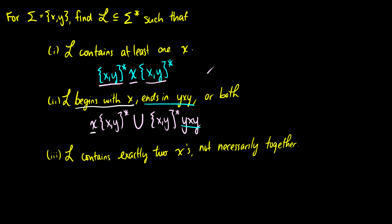For the third question, L contains exactly two x's, and they don't necessarily have to be together. We need an x somewhere, then another x somewhere, and before, in the middle, and after we can have any number of y's. So it's y* x y* x y*. This is the language that contains exactly two x's. The curly braces around y are omitted since there's only one symbol.